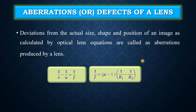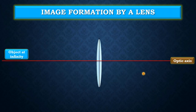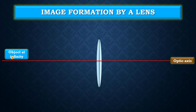Let us see how a convex lens forms an image of an object situated at infinity and another object situated at a finite distance from the lens. When the object is placed at infinity and the object is white in color, the radiation coming from the object will also be white in color. Since the object is at infinity, the light rays coming from it will be parallel to the optical axis. Let us see this animation.